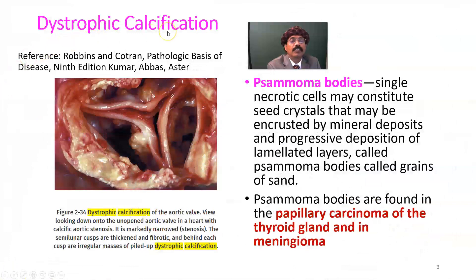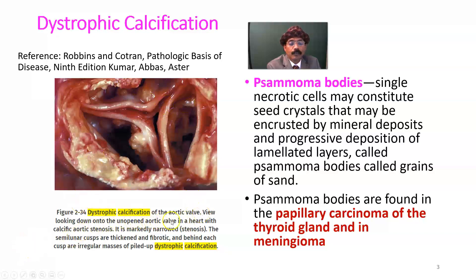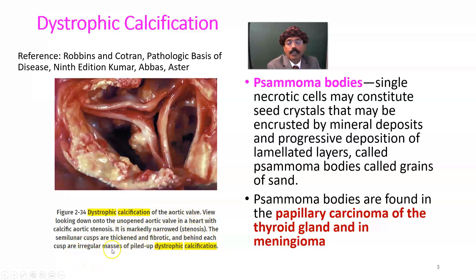Here are examples of dystrophic calcification in the aortic valve — this is the semilunar valve, which guards the beginning of the ascending aorta from the left ventricle. Calcification here leads to aortic stenosis; this valve will be stenosed due to thickening. The semilunar valves are thickened and fibrotic, and behind each valve are irregular masses of piled-up dystrophic calcification.